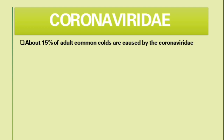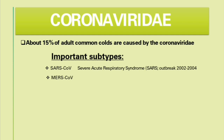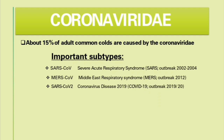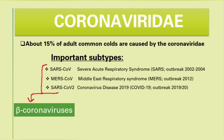About 15% of adult common colds are caused by coronaviruses. The most important subtypes include SARS-CoV, which was responsible for the severe acute respiratory syndrome of 2002 to 2004; MERS-CoV, which was responsible for the Middle East respiratory syndrome of 2012; and SARS-CoV-2, responsible for the coronavirus disease of 2019 or COVID-19. These three subtypes are specifically beta-coronaviruses.